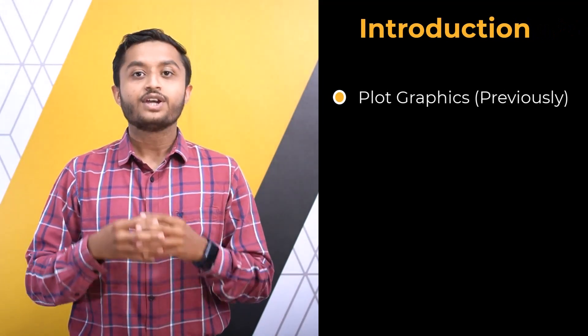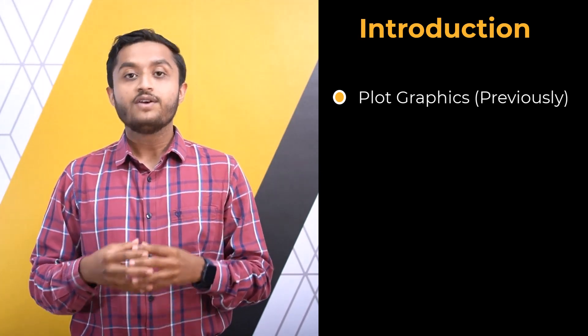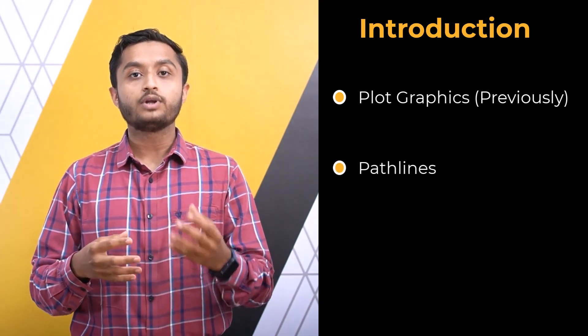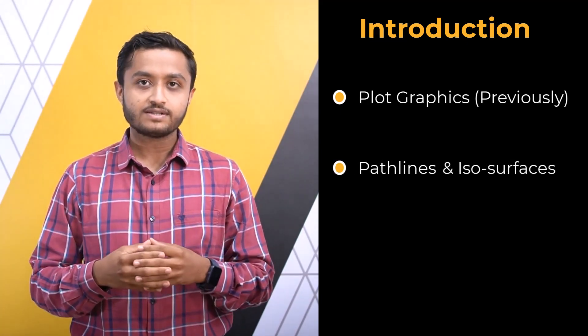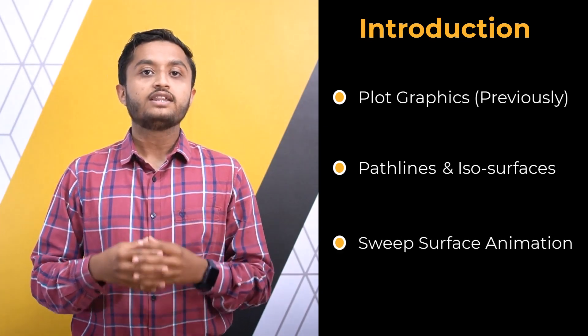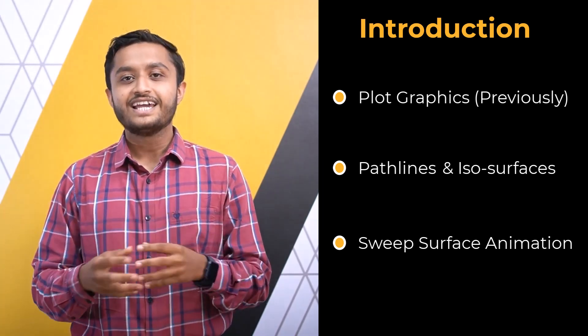Hello and welcome to Part 2 of the two-part lesson on post-processing of simulation results of an FSA car. In the previous video, we discussed how to plot different contours, vectors, and how to create different scenes. In this video lesson, we will start by plotting pathlines, then discuss how to plot and analyze isosurfaces, and finally create a sweep surface animation to understand the evolution of flow vortices around the car body.